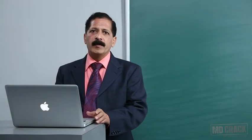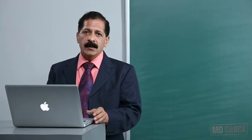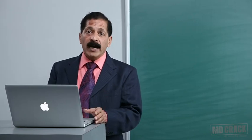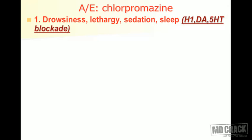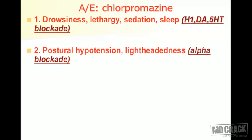We have learned the actions of chlorpromazine. Now we're going to build up the adverse effects. Number one: it blocks H1 receptors, dopaminergic receptors, and 5HT receptors. Blockade of all these receptors leads to drowsiness, lethargy, sedation, and sleep. So all these adverse effects can be remembered on the basis of blockade of H1, DA, and 5HT receptors.